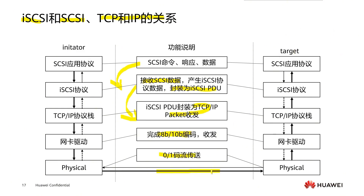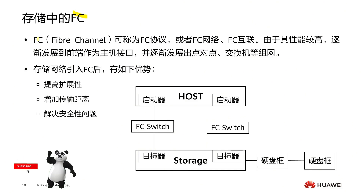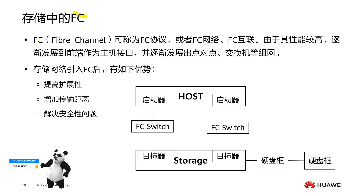Next is the FC (Fibre Channel) protocol. FC was released in 1988 and was originally used to increase the transmission bandwidth of the hard disk protocol. It focuses on fast, efficient, and reliable data transmission. FC has both channel and network advantages, offering high bandwidth, high reliability, high stability, and resistance to electromagnetic interference. It has gradually been developed as a host interface and supports point-to-point, switch, and other networking topologies similar to TCP/IP.